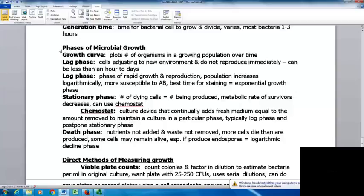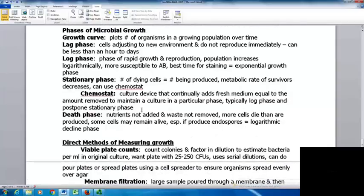During stationary phase, the number of cells dying equals cells being produced. The metabolic rate of survivors decreases. One way to have this occur is using a chemostat - a culture device that continually adds fresh medium equal to amount removed to maintain culture in a particular phase. Typically, you try to maintain log phase and postpone stationary phase. In stationary phase, waste is building up and they're not getting nutrients. That leads to death phase where nutrients aren't added and waste isn't removed. Here, more cells are dying than being produced. Some cells may remain alive, especially if they can produce endospores. This is sometimes called logarithmic decline phase.